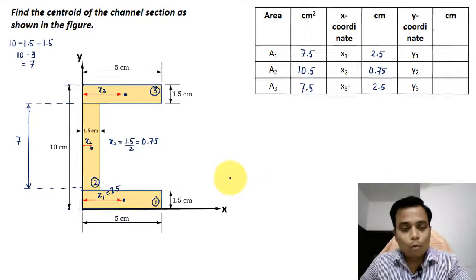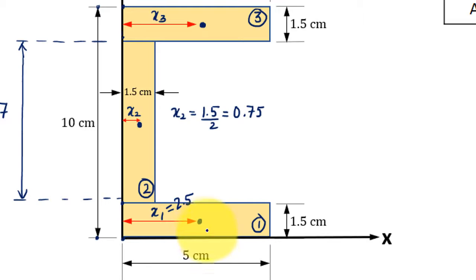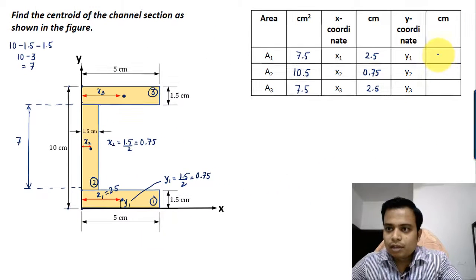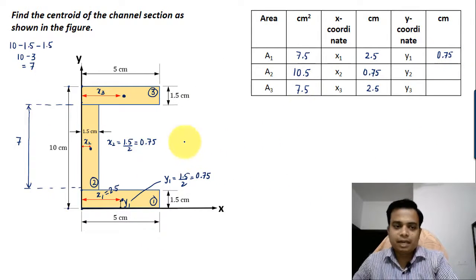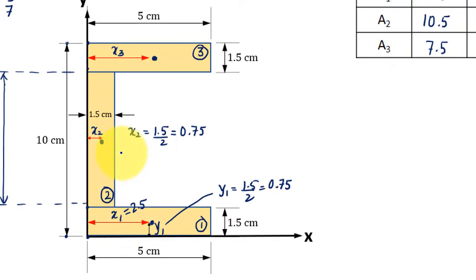Now let's go ahead and get the value of y coordinates. This is going to be y1. Y1 is going to be half of 1.5, which is 0.75.